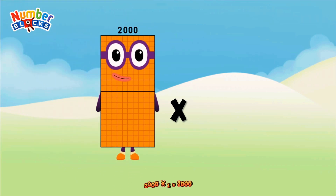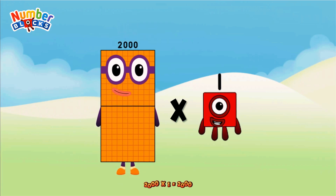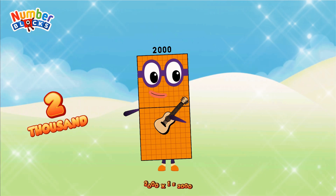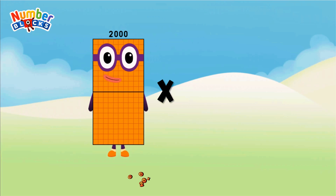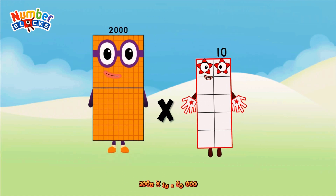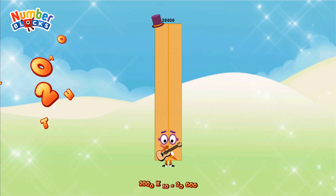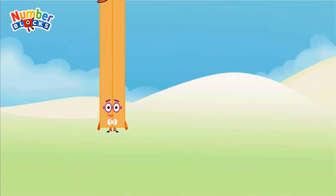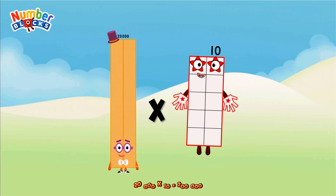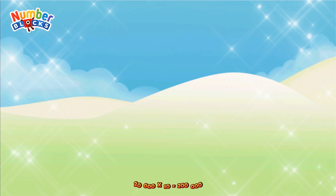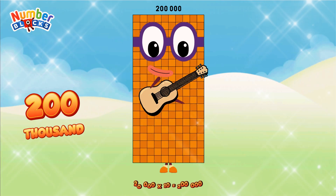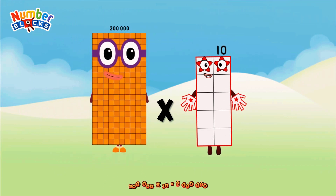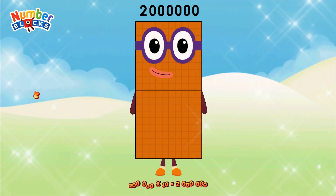2,000 multiplied by 1 equals 2,000. 2,000 multiplied by 10 equals 20,000. 20,000 multiplied by 10 equals 200,000. 200,000 multiplied by 10 equals 2,000,000.